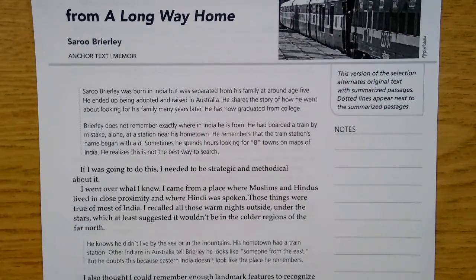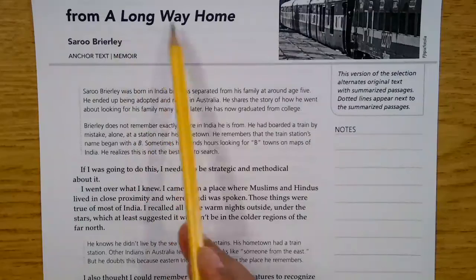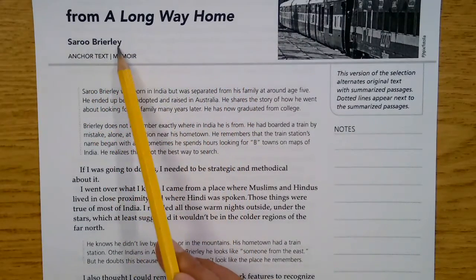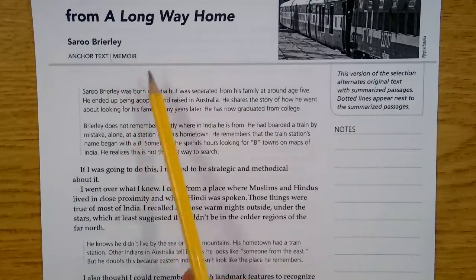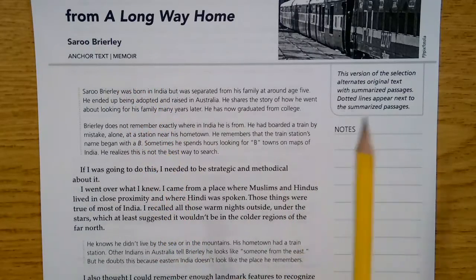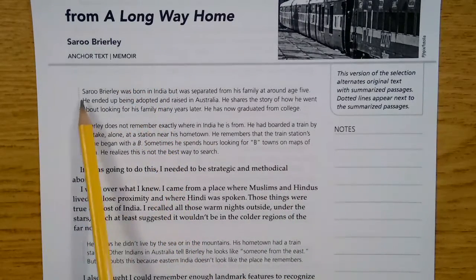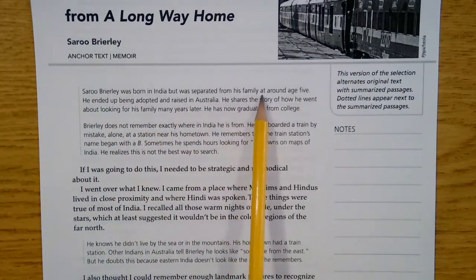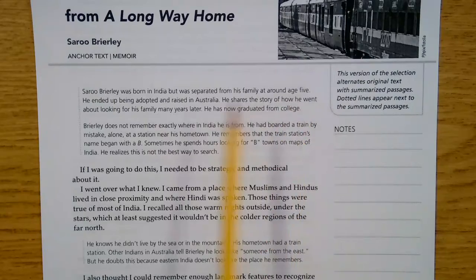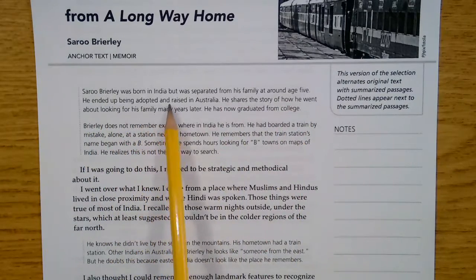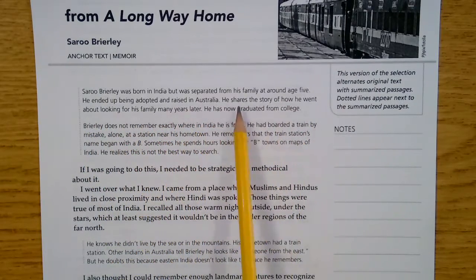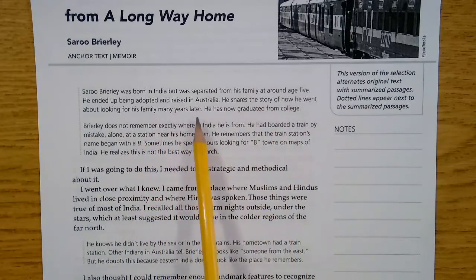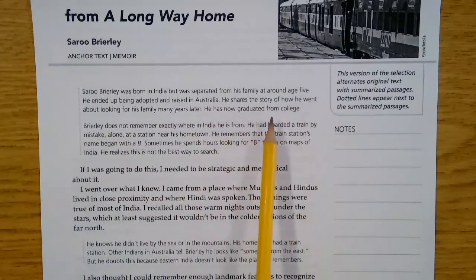You are going to read and annotate from A Long Way Home. This is by Saroo Brierley, and it is a part of his memoir. Saroo Brierley was born in India but was separated from his family at around age five. He ended up being adopted and raised in Australia. He shares the story of how he went about looking for his family many years later. He has now graduated from college.